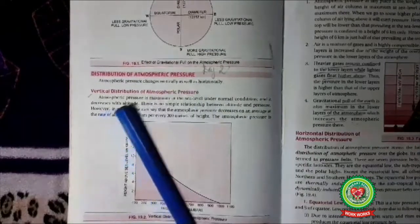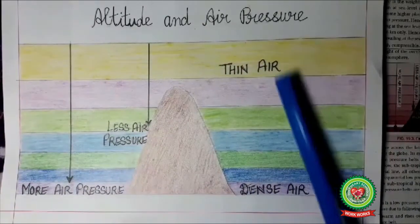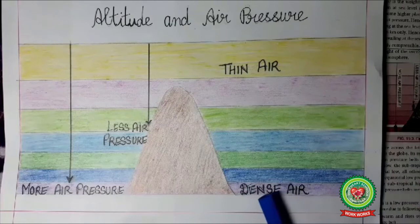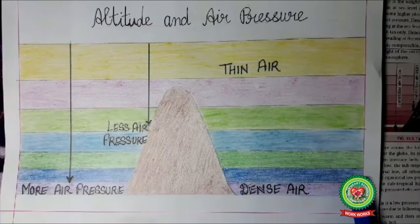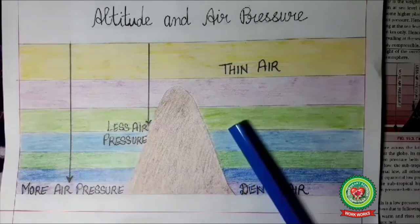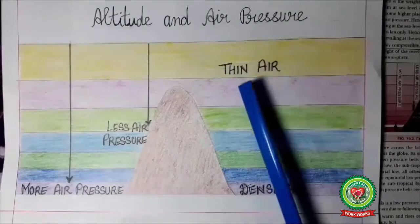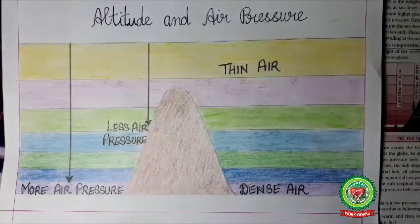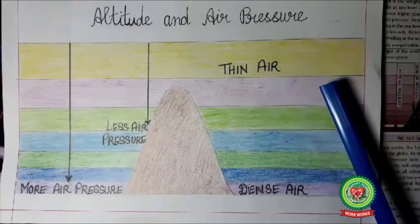Next, we will study the distribution of atmospheric pressure, starting with vertical distribution. The lowest layer is compressed by the upper layers and contains heavier gases like oxygen and carbon dioxide, more dust particles, and experiences greater gravitational pull — so the lowest layer has high pressure. As we go higher, the air becomes thinner and pressure decreases due to less weight from other layers, presence of light gases, and less gravitational pull. Atmospheric pressure is highest at sea level and decreases with height, so mountains and higher altitude areas have low pressure.